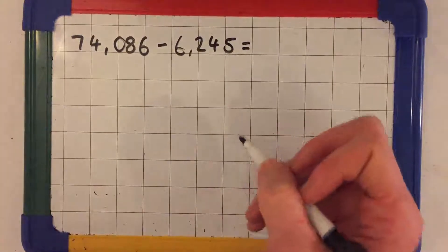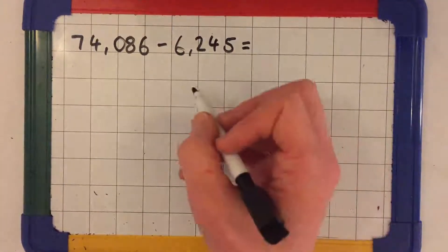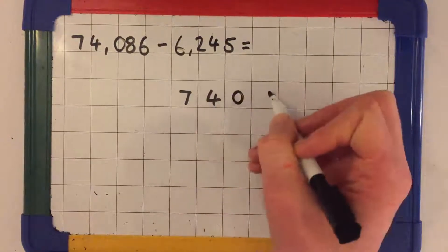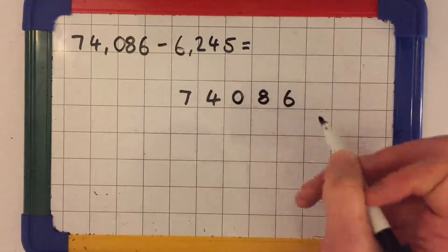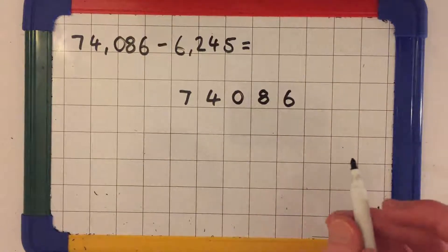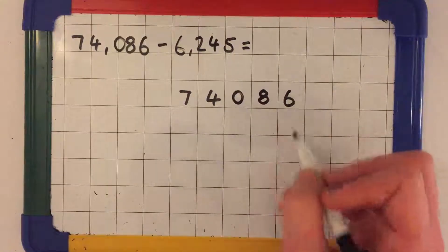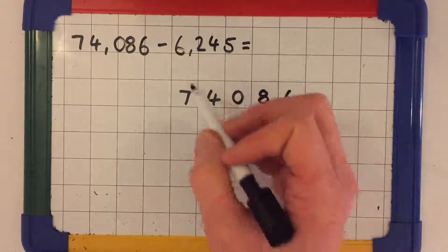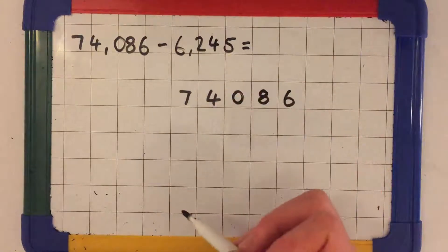The first step in solving this equation is to write our larger number on top of our smaller number. It's crucially important that you write all the ones in the ones column, all the tens in the tens, the hundreds in the hundreds, thousands in the thousands, and ten thousands in the ten thousands.